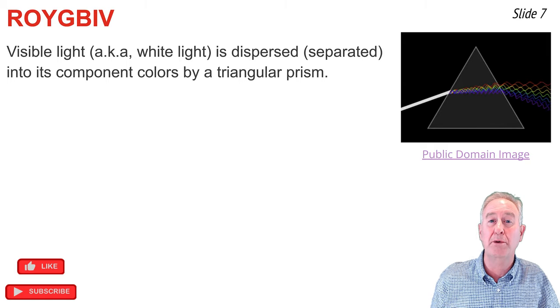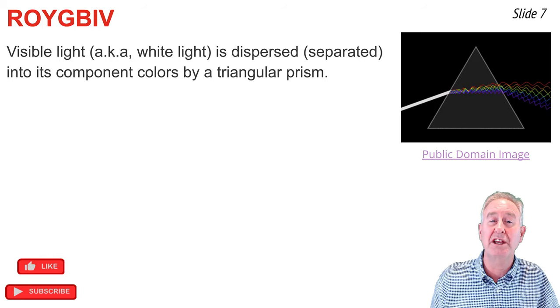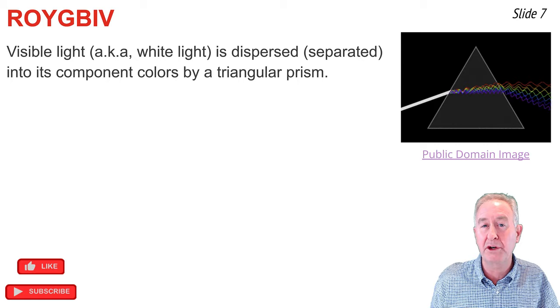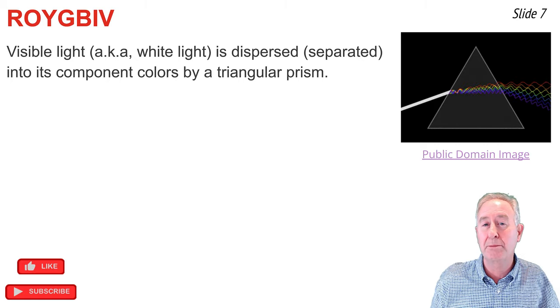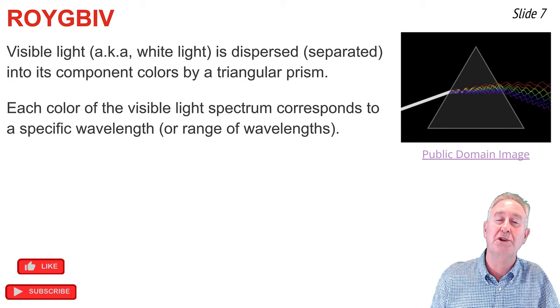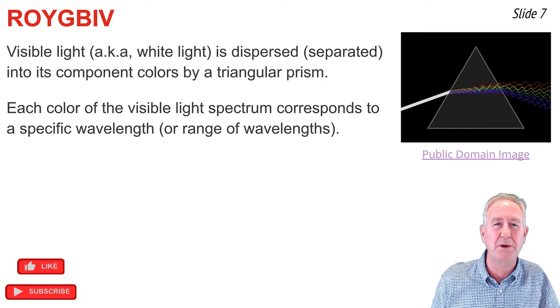Since the ability of a wave to undergo refraction as it passes through the triangular prism is dependent upon wavelength, we understand that each color is associated with its own wavelength or range of wavelength.